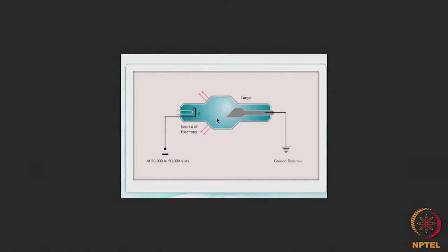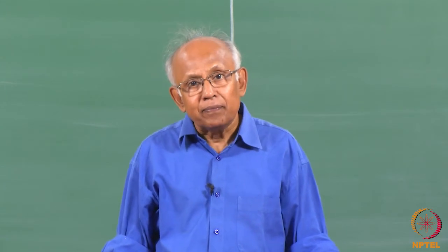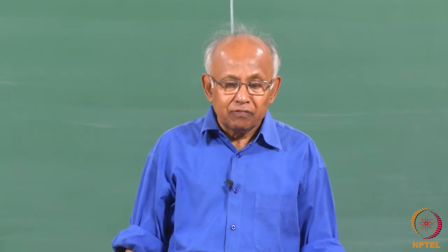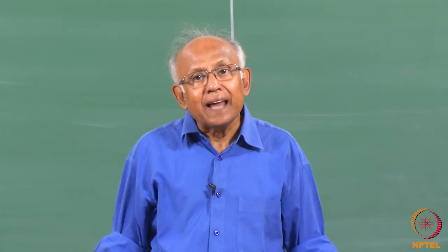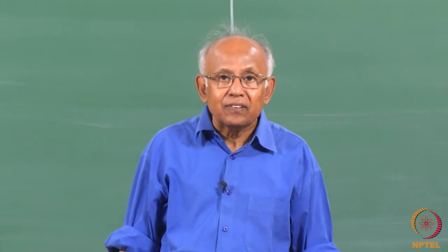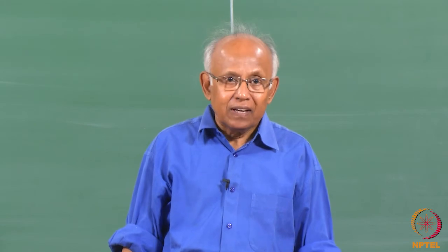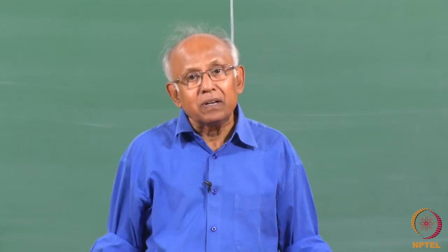Again, if there are more than one element — say two elements A and B which make up the target — we will get the characteristic Kα and Kβ radiations not only from element A but also from element B. By analyzing the output from the target, we can identify the wavelengths of those characteristic radiations, which gives us an idea about the identity of the elements present.